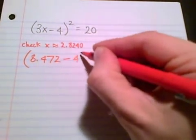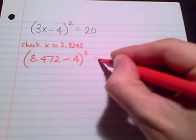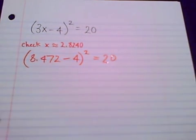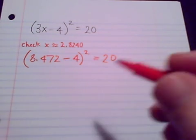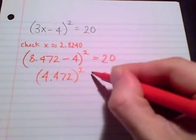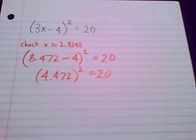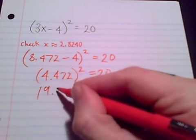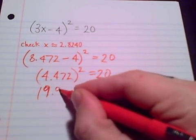I still have the minus four when I square it, but equals zero. Okay, to take away four gives me that 4.472. Square that. The moment of truth.